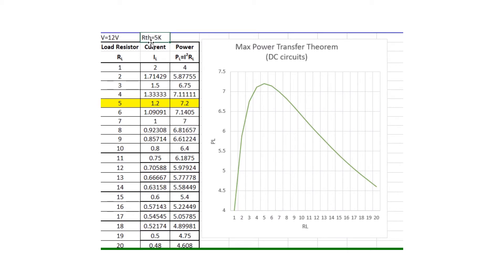We try different values of RL and we see that when RL is set equal to R thevenin, the power transfer to the load is maximum. The same concept is described by this graph. For RL equal to 5k we have the maximum power.